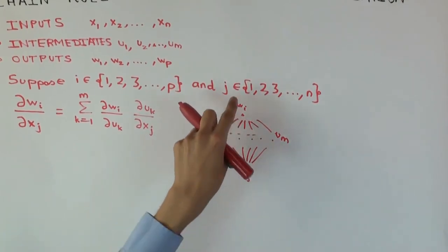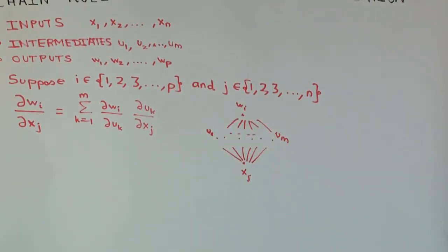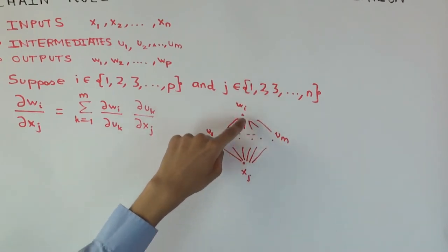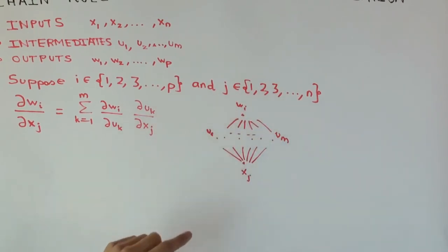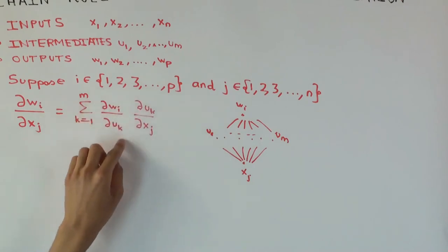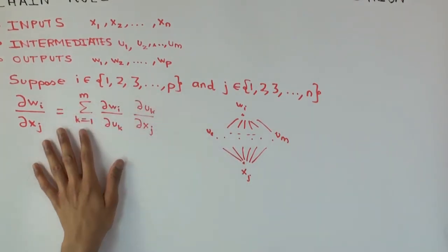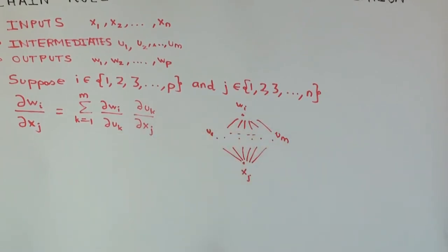Let's ignore the other inputs for now and all the other outputs. So you just have one input xj, one output wi. You have all the intermediate variables between the input and the output. Now, to figure out the partial of this, you have to figure out all the pathways through which the dependency manifests itself.